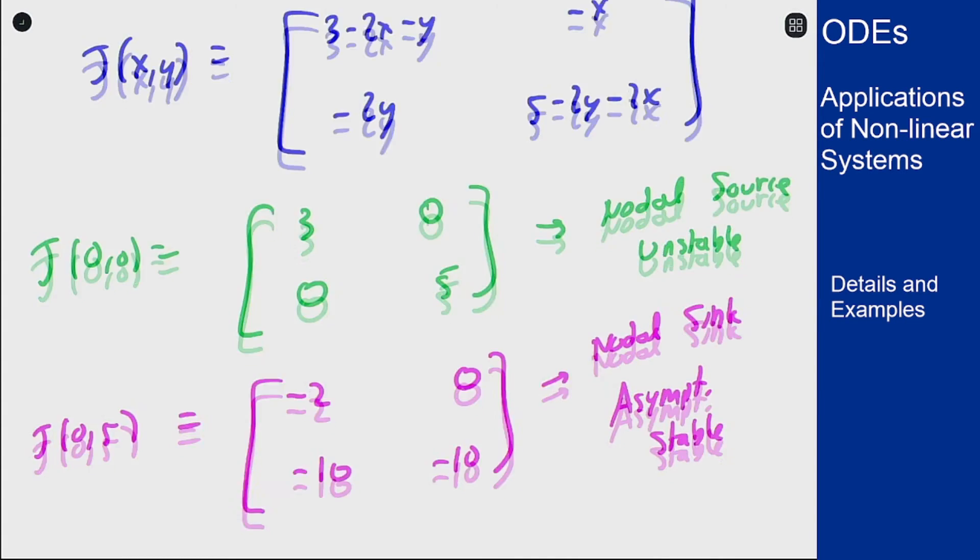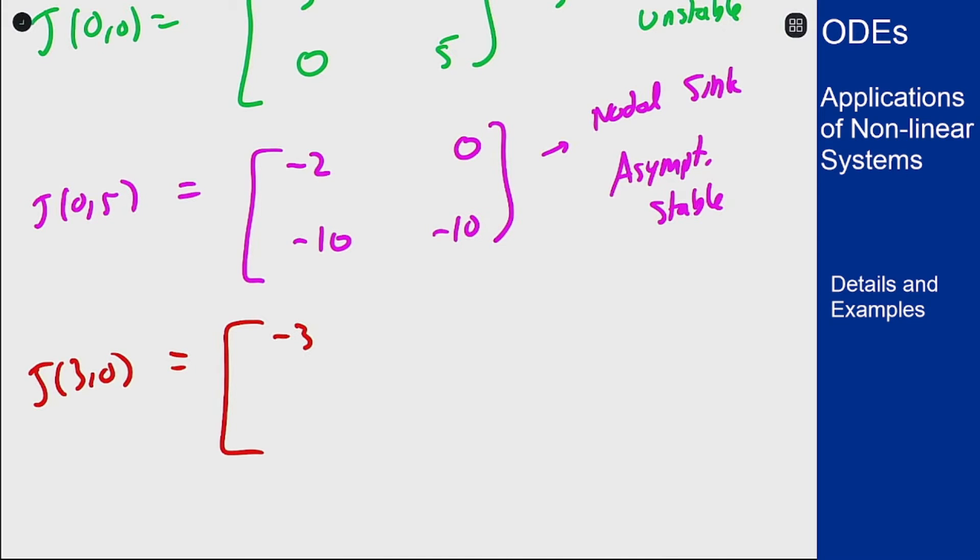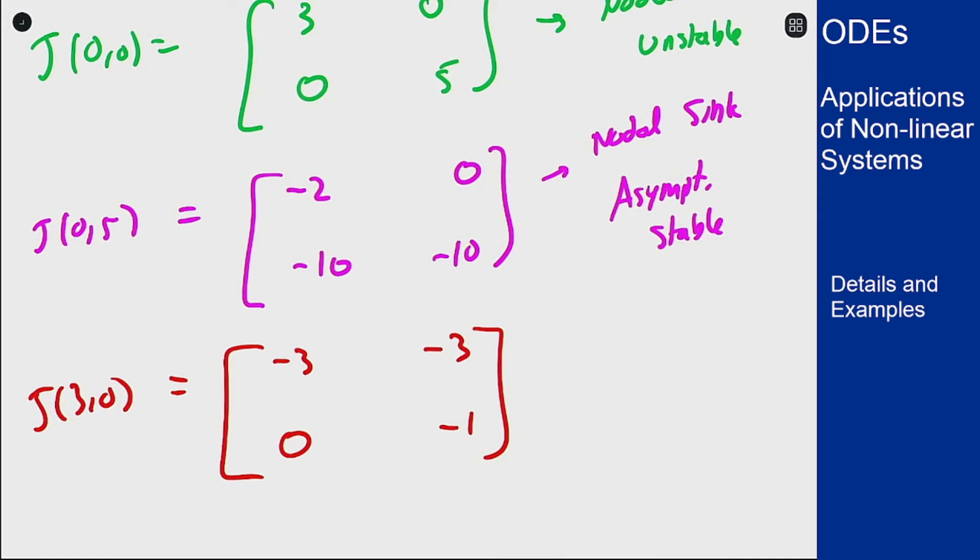We have 3, 0 which is minus 3, minus 3, 0, and minus 1 which is triangular again its eigenvalues minus 3 and minus 1 so it's again a nodal sink. That's asymptotically stable.